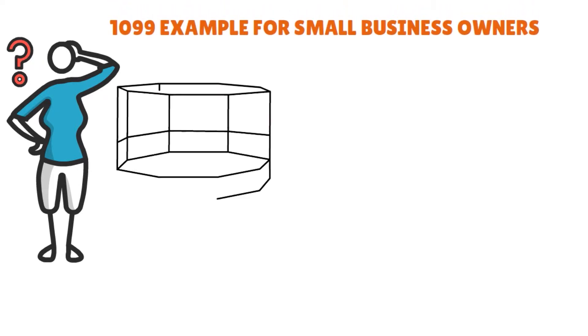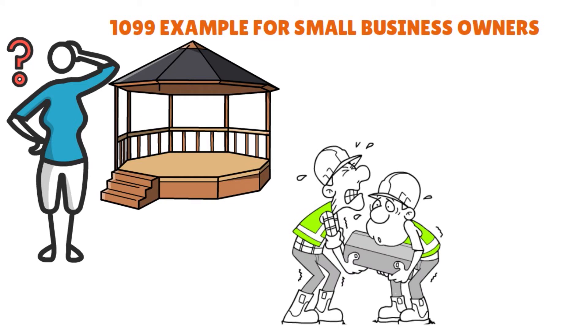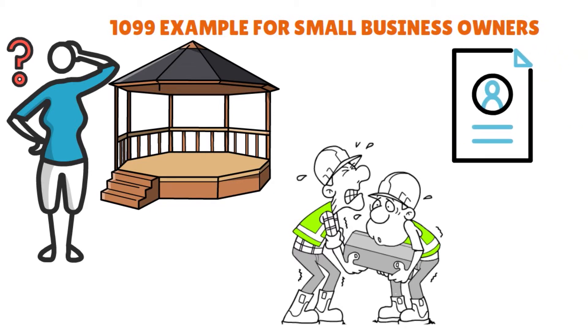Let me give you two examples to clarify. First, a 1099 example for small business owners: let's say you own a small outdoors event venue called Paradise Event Incorporated. You hire a local landscaper who operates as a sole proprietorship to beautify the area. He does the job and it looks great — the final cost is $1,500. During tax season it's up to you to send him Form 1099 recording the amount paid and the service, and you also need to send the IRS a copy.